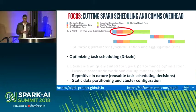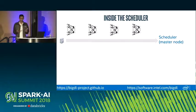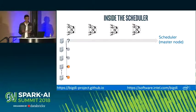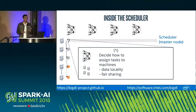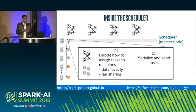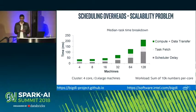Looking inside the scheduler more closely: the scheduler runs as part of the driver or master node. When a stage of tasks arrives, the scheduler determines where and how tasks need to be executed — taking into account data locality and fair sharing of cores across computations. Once the assignment is determined, there is additional computation involved in serializing and sending those tasks out to the various machines in the cluster.